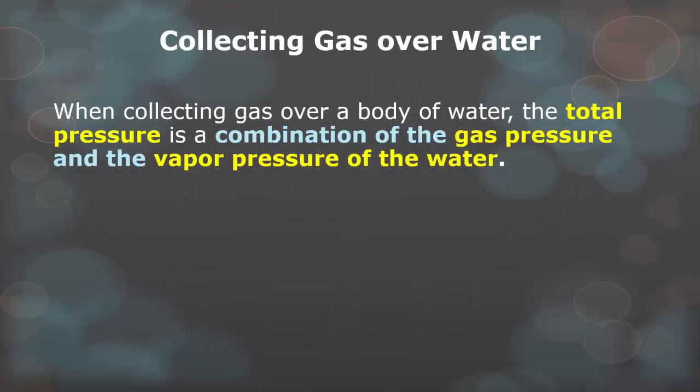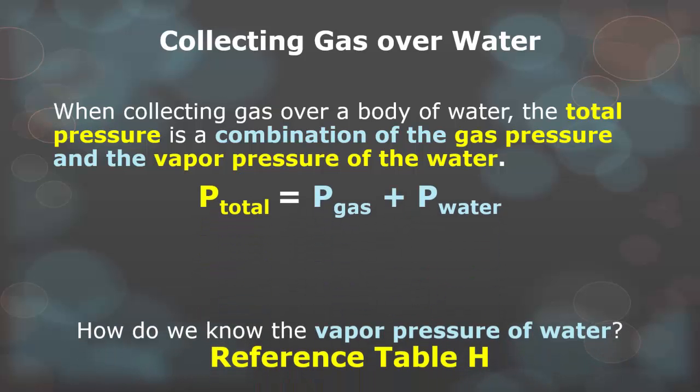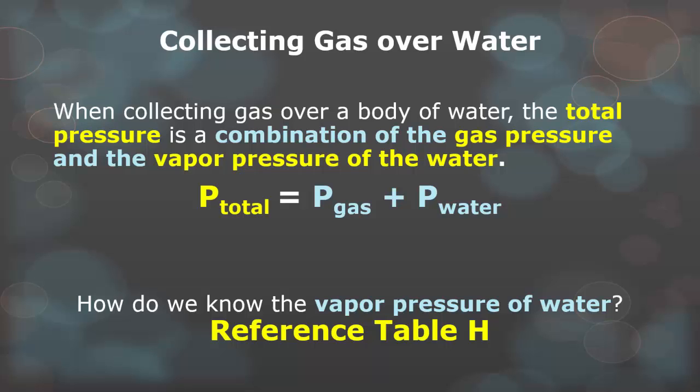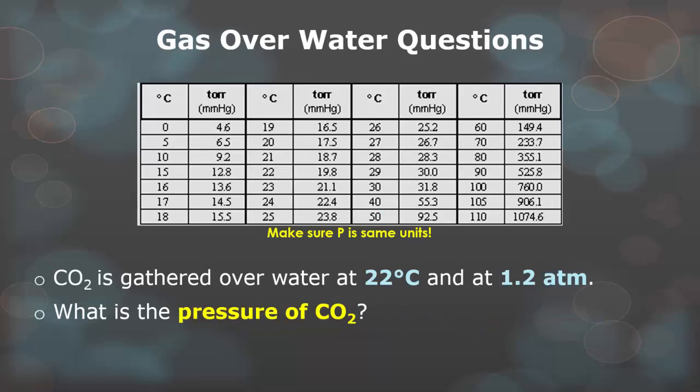So when we want to collect gas over water, which is a common technique in chemistry, we are going to have to think about two different factors. The total pressure of anything that we collect is going to be a combination of the gas itself and the vapor pressure from the water that it's immersing through. So when we look at our formula, we're going to say the total pressure is equal to the pressure of just the gas that we're collecting and the pressure of the water that we're also collecting at the same time. So how do we know the vapor pressure of water? We need to use reference table H. Reference table H is vapor pressures, and that will tell us what the pressure of water is at different temperatures. So CO2 is gathered over water at 22 degrees Celsius and at 1.2 atmospheres. We want to find out the pressure of the CO2 was in the 1.2 atmospheres.